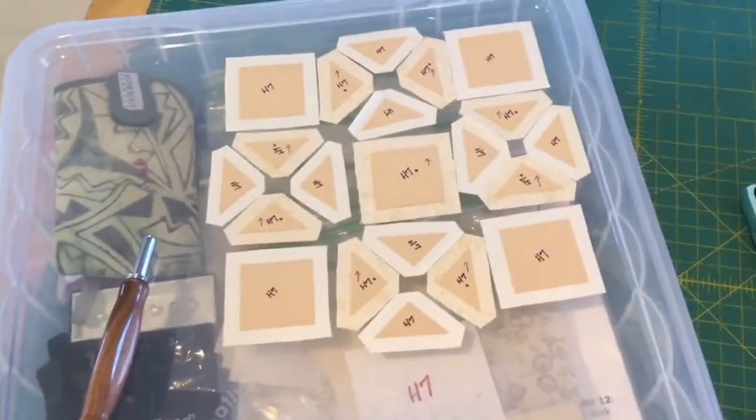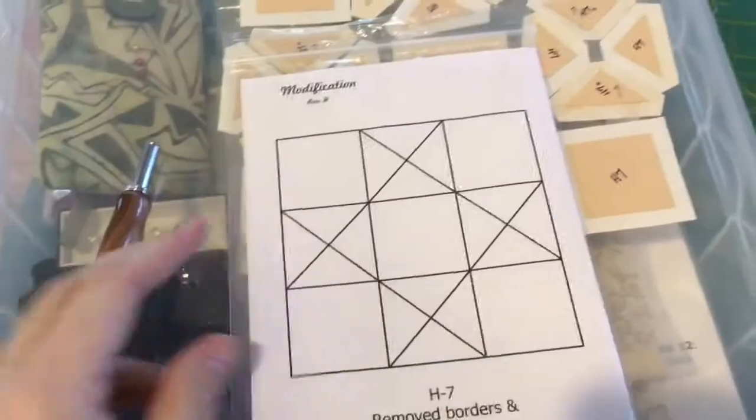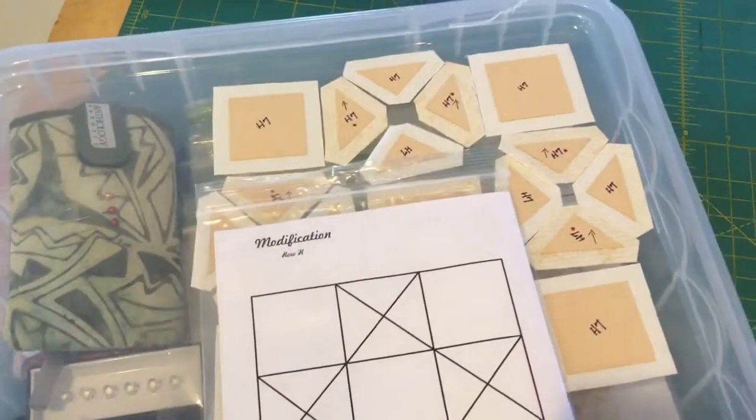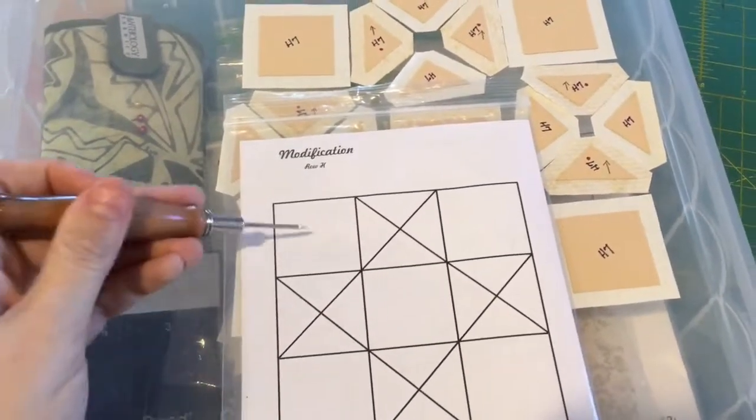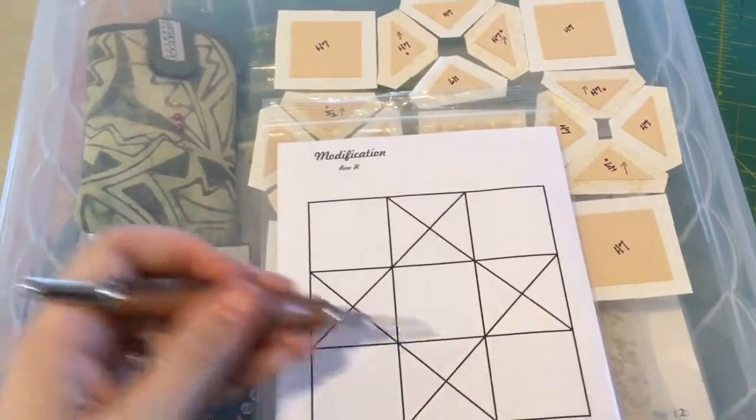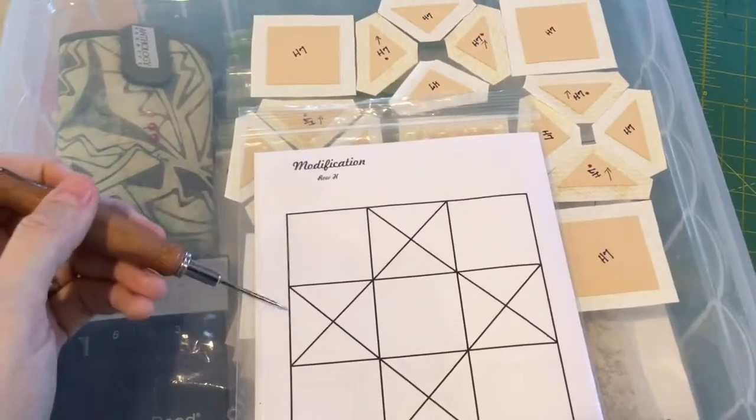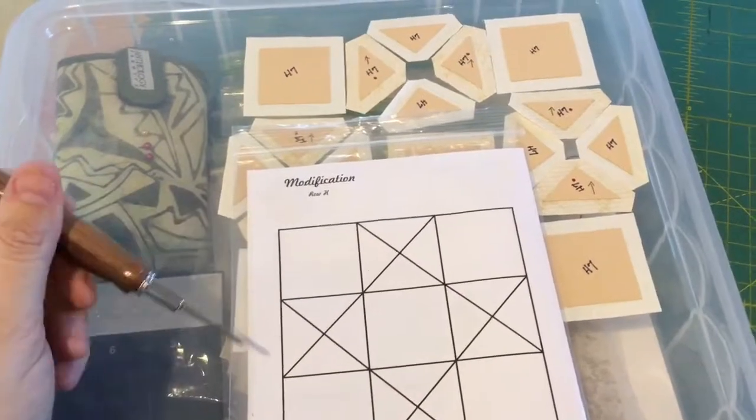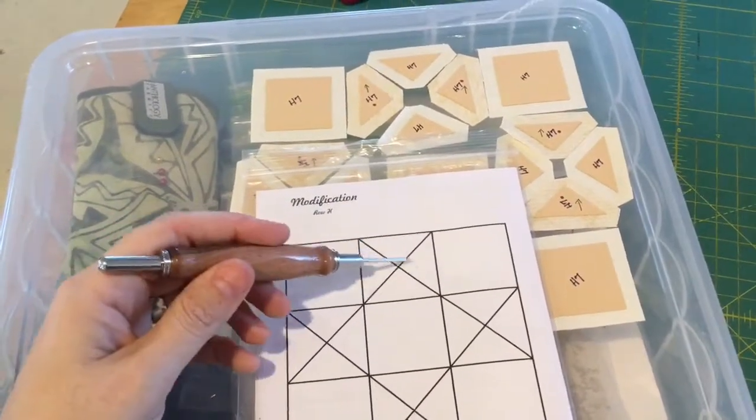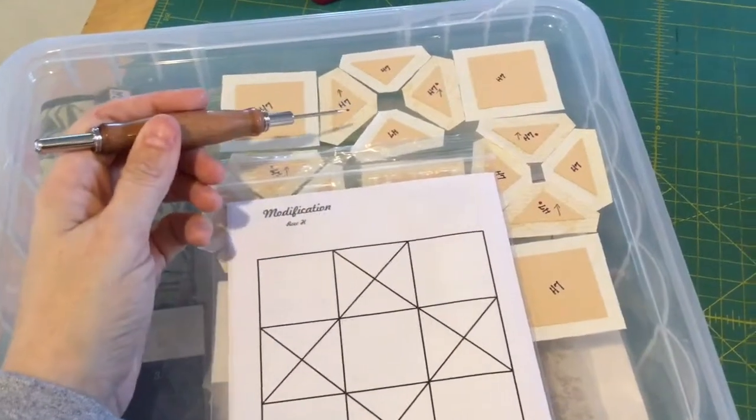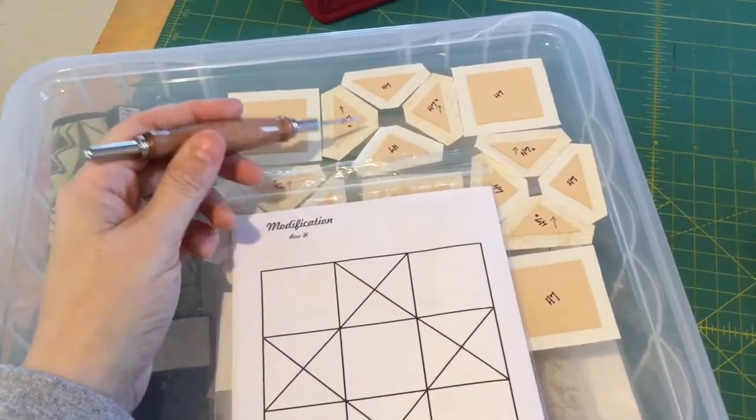For the assembly of this block, I am going to take and baste my pieces. I'm going to baste these big squares, and my big squares I baste opposite edges and then opposite edges. Then I'm going to assemble these pieces into squares as well.